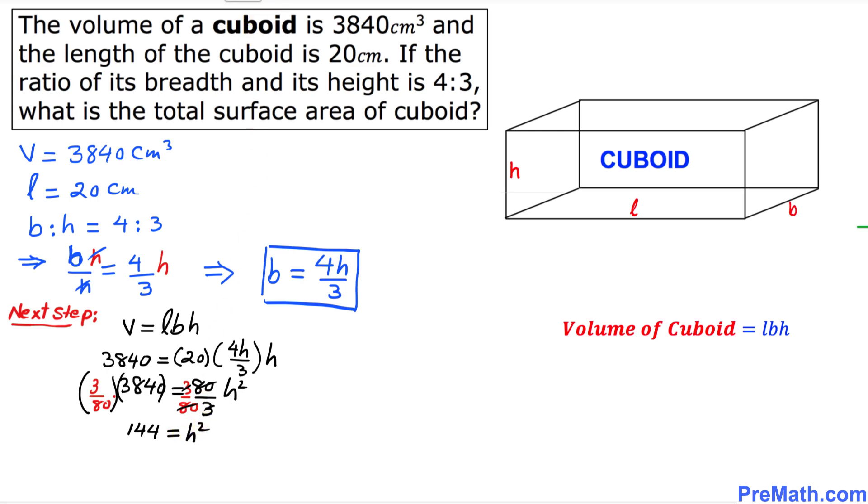Now we want to remove this square by taking the square root on both sides. If I take the square root, this gives us h equals 12 cm. The height turns out to be 12 cm.